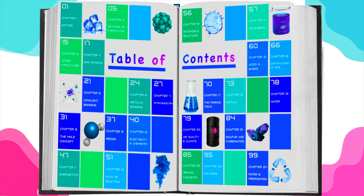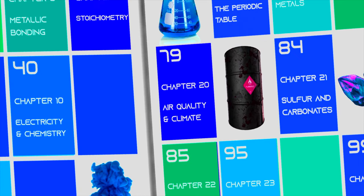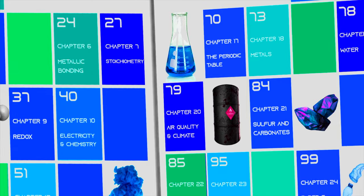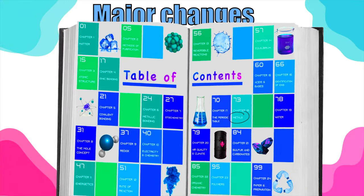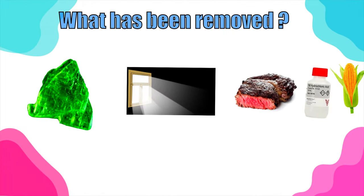The most important change came in chapter 20, now called 'Air Quality and Climate' — it used to be called simply 'Air' in the old syllabus. The other chapter that has been largely changed is the chapter on metals. They have basically taken away two large topics from this chapter: thermal decomposition and the extraction of zinc. These two topics used to be large parts of the exam paper.